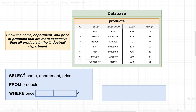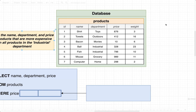Let's take a look at another use of a subquery inside of a WHERE clause. This time around we're going to be making use of an operator that we've not used before to do our comparison. The goal here is to show the name, department, and price of all the different products that are more expensive than all of the products in the industrial department.